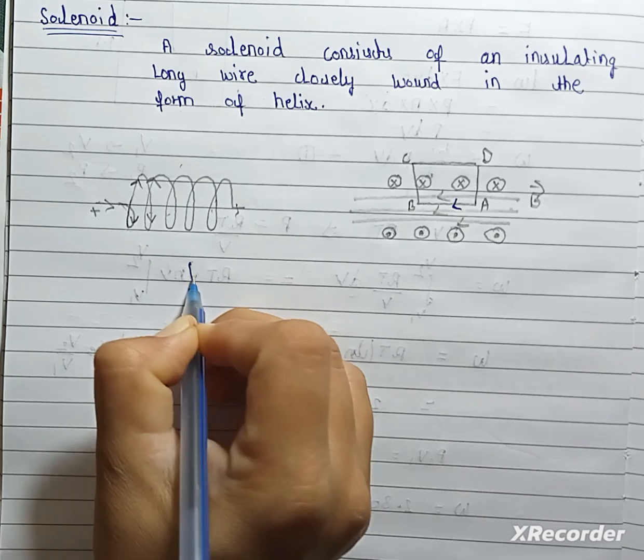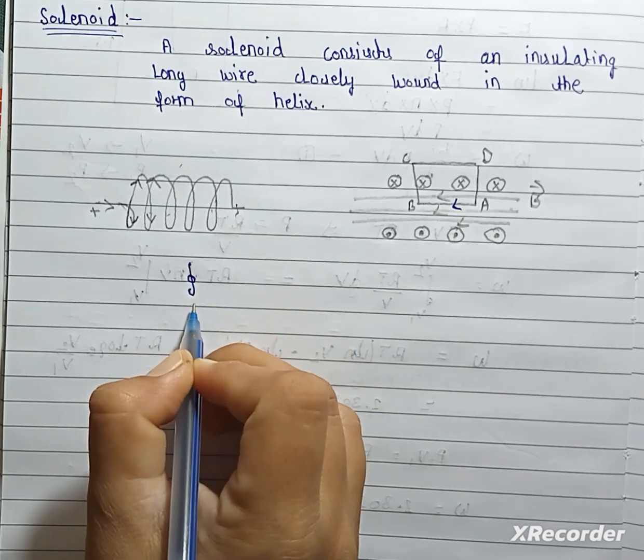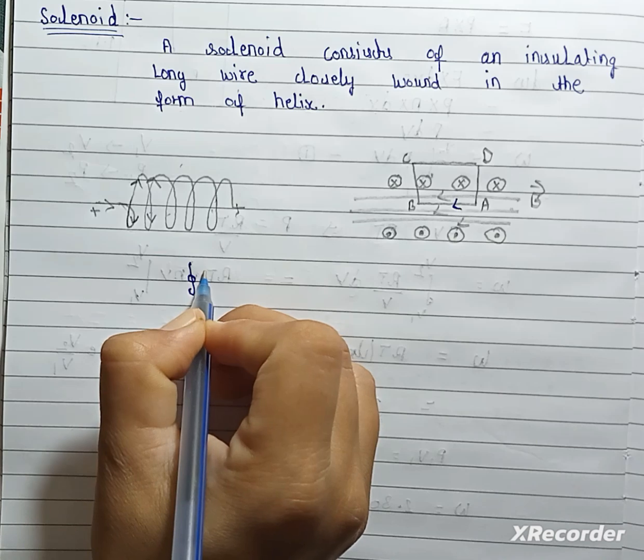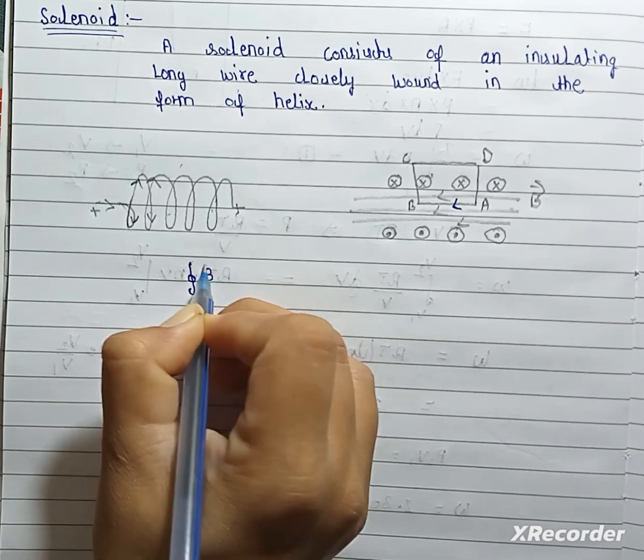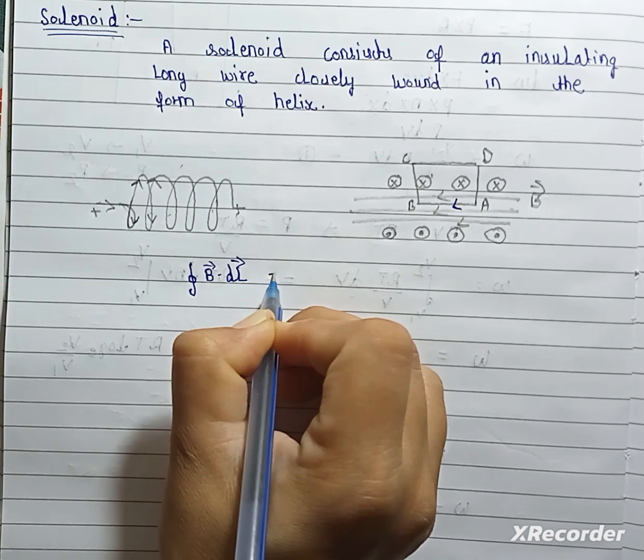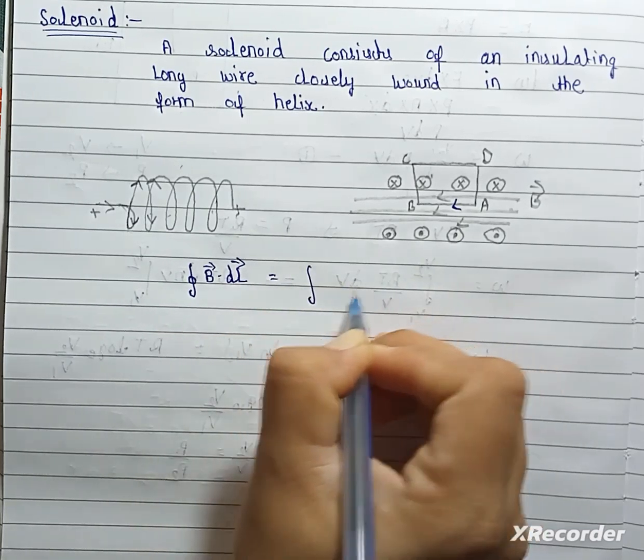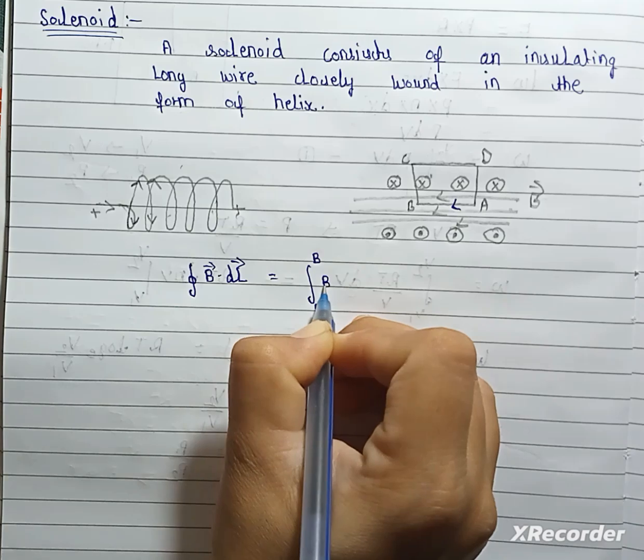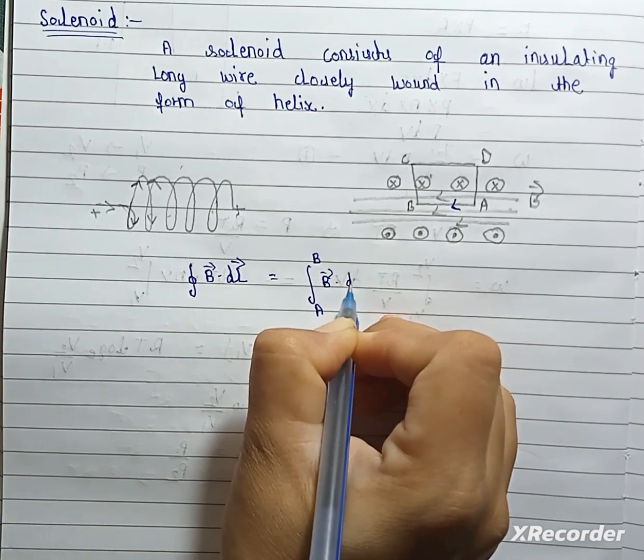Closed integral of A, B, C, D for whole loop: B dot DL. Here, firstly, for AB. AB, B dot DL.